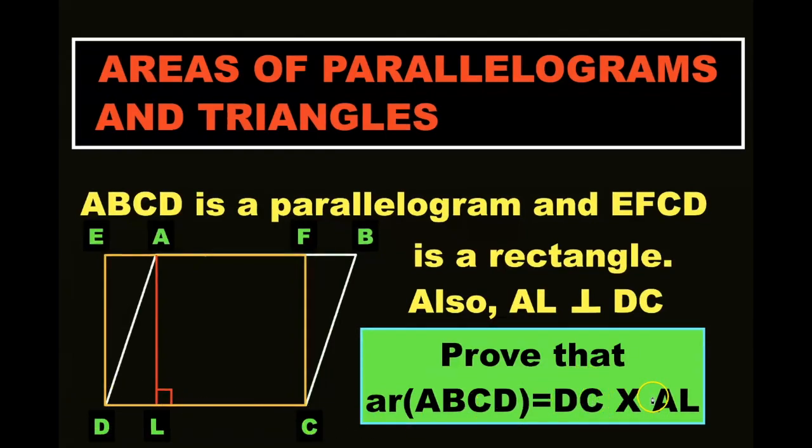CD times AL means area of ABCD. ABCD is a parallelogram and parallelogram area is base times height. We have to prove that parallelogram area is base times height.